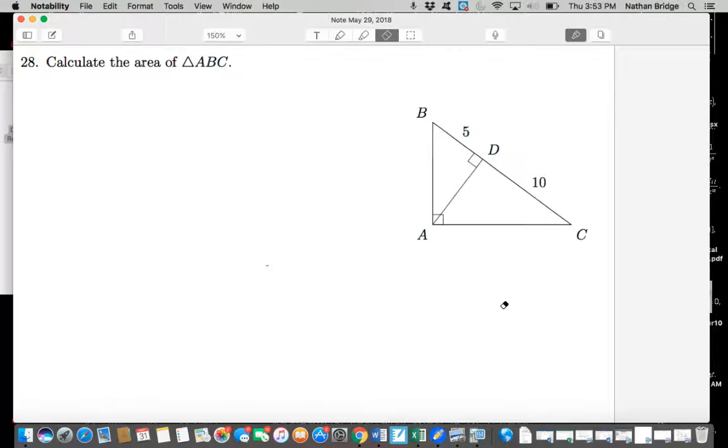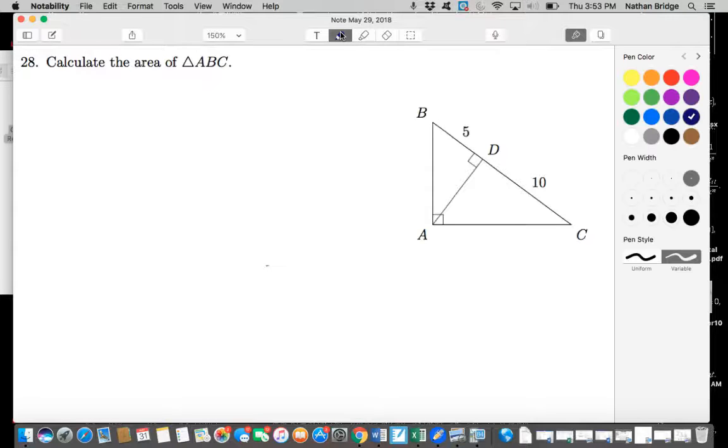All right, putting together another video for you. This was number 28. It says calculate the area of ABC. And I'm recalling here that the formula for the area of a triangle is one half the base times the height.